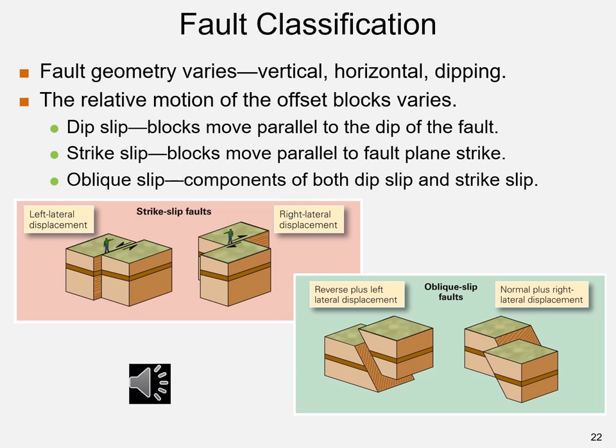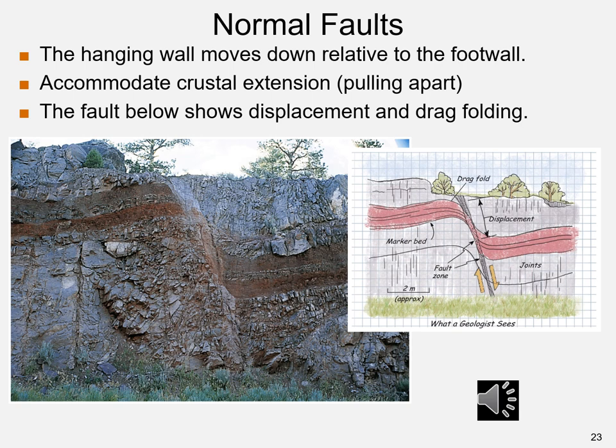Oblique slip exhibits components of both dip-slip and strike-slip. A reverse plus left lateral displacement fault shows the hanging wall sliding up and the blocks moving left. A normal plus right lateral displacement fault shows the hanging wall sliding down and blocks moving right. A photograph shows a normal fault along a cliff where a layer of red rock has been displaced, with the diagram labeling the marker bed, displacement, fault zone, joints, and drag fold.